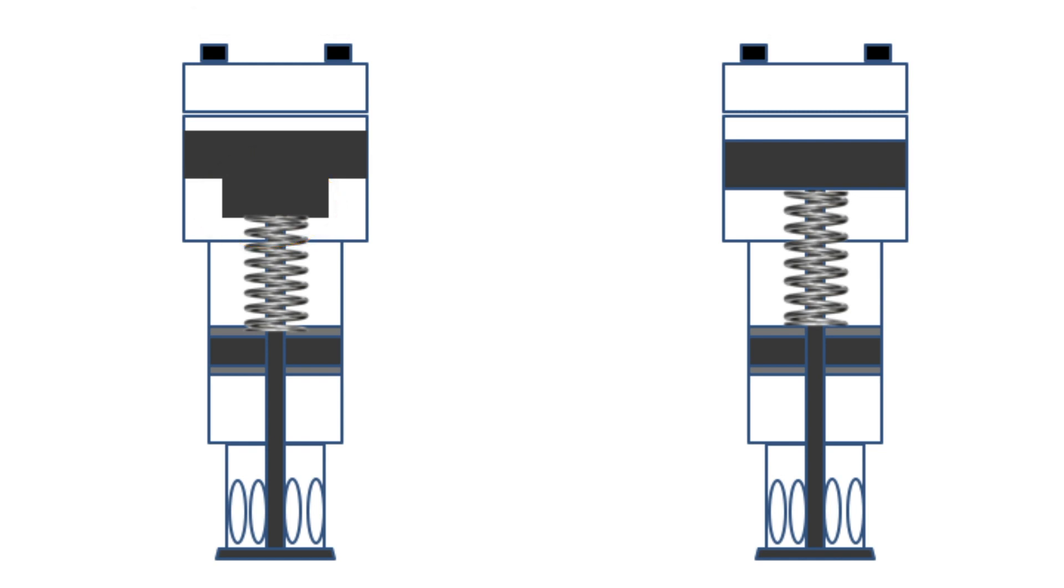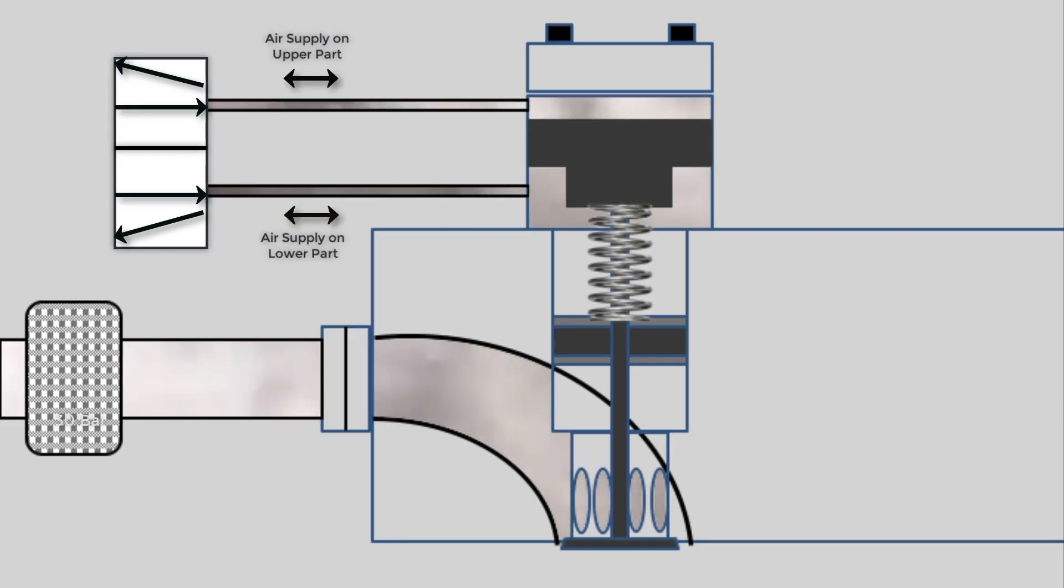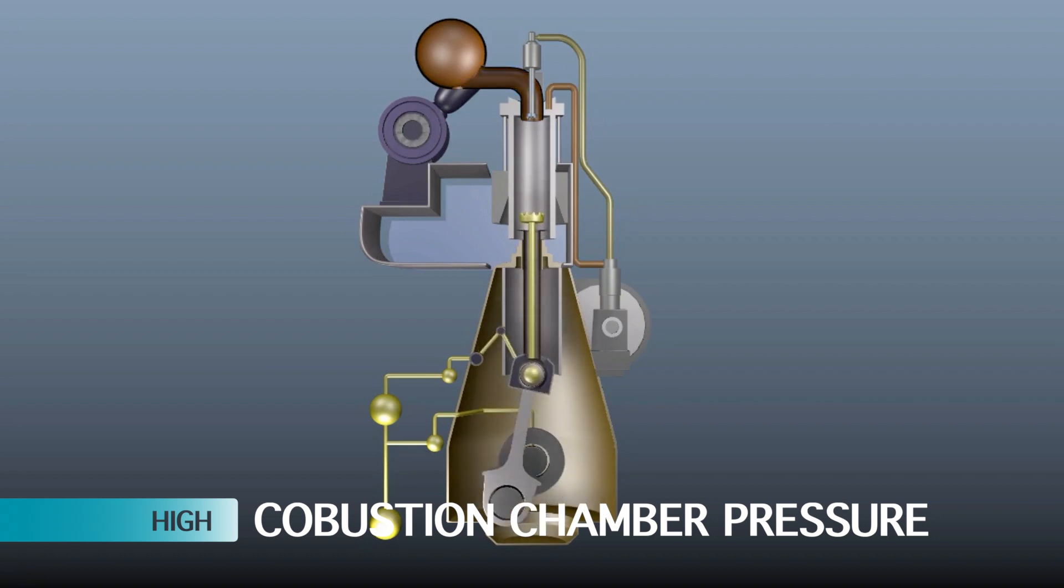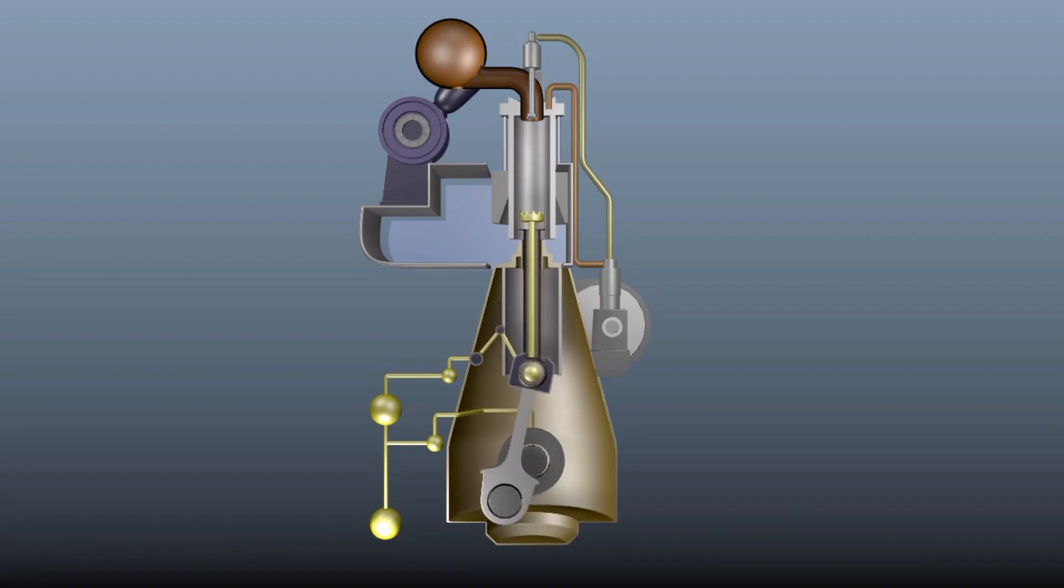In this type of air start valve, air on both sides of the operating piston is supplied via a control valve to maintain positive closing. This ensures the valve will remain closed even when the gas pressure is higher than the starting air pressure when the cylinder is firing.